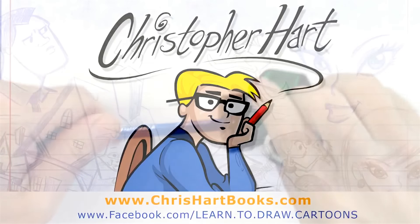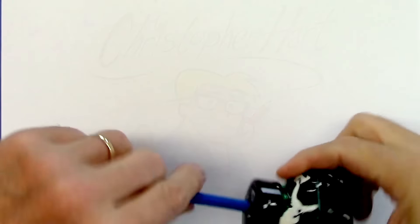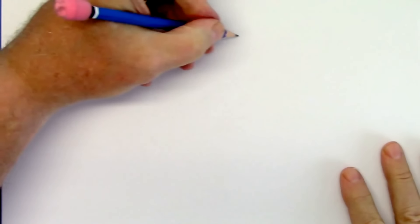Hi, my name is Christopher Hart. I'm a cartoonist and an author. And today I'm going to show you how to draw an elephant from an oval.